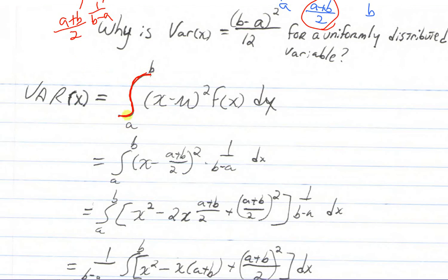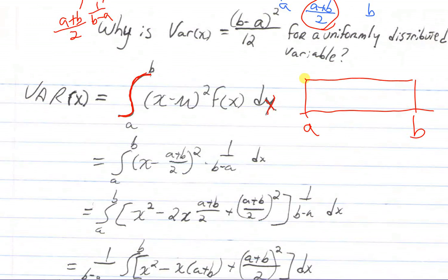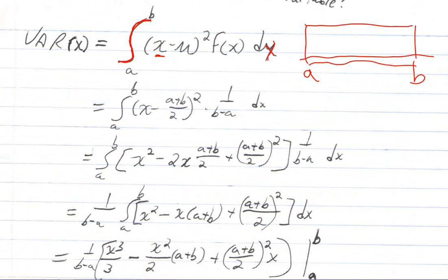We're going to add up from a to b — a continuous integral of (x minus mu) squared times f(x) — and then we add a little dx on the end, which says what we're adding up with respect to. We're going from a to b along the x-axis, changing x continuously from a all the way up to b. This is really where all the magic happens: I just replace the mean with (a + b) / 2 and replace f(x) with 1 over (b minus a).